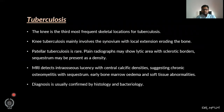Tuberculosis: the knee is the third most frequent location for tuberculosis, mainly involving the synovium with local extension eroding the bone. Patella tuberculosis is very rare. Plain radiographs may show lucency with sclerotic borders, and a sequestrum may be present. MRI detects intraosseous lucency with central calcific density, suggesting chronic osteomyelitis with sequestrum, early bone marrow edema, and soft tissue abnormality. Diagnosis is usually confirmed by histology and bacteriology.